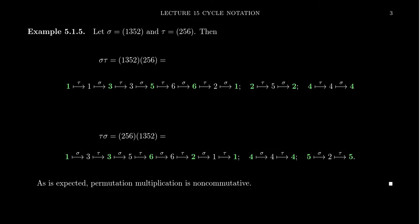In the previous video, we learned about cycle notation for permutations — a much more preferred way of representing permutations in this abstract algebra setting. Products of permutations can easily be computed using cycle notation, much easier than with the two-row tableaus.